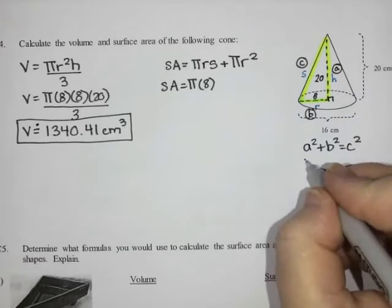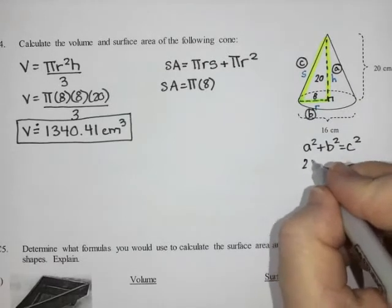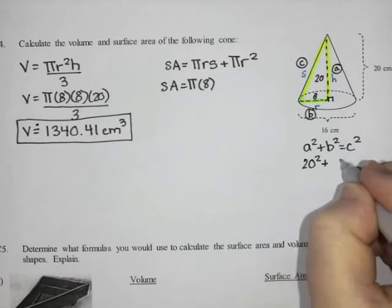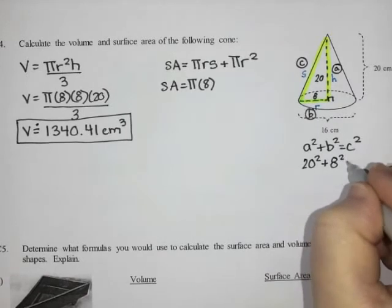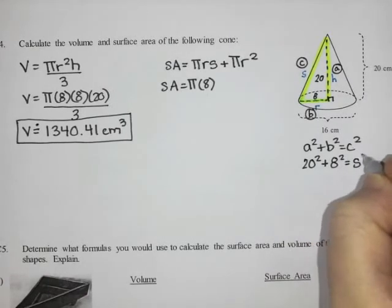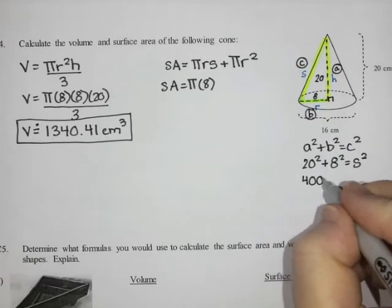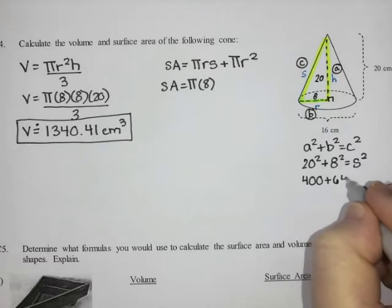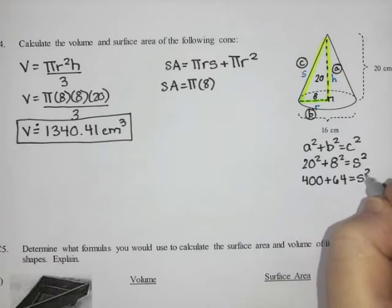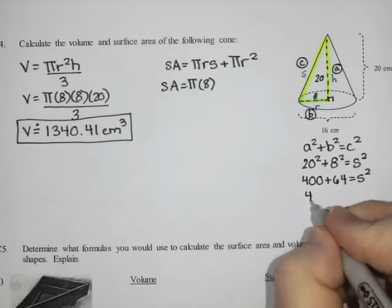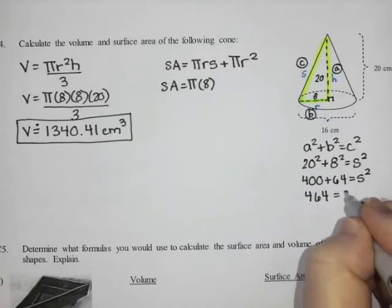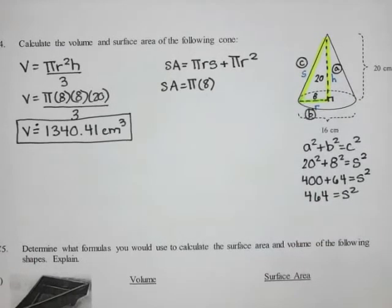A squared plus B squared equals C squared. So H squared, that's 20 squared plus B, that's eight squared equals my slant side squared. 20 times 20 is 400. Eight times eight is 64. 400 plus 64 is 464.